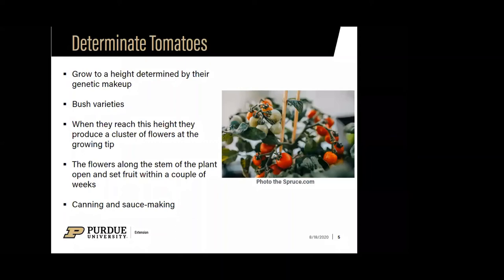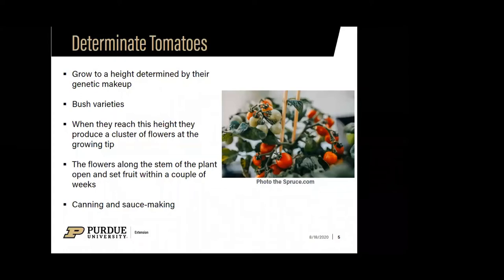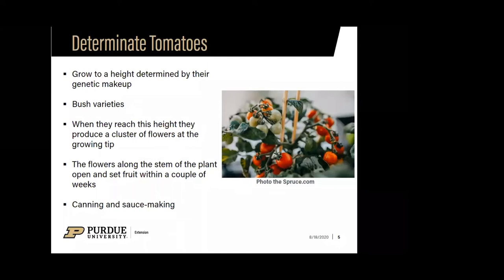Tomatoes are classified according to their growth habit: determinate and indeterminate. Determinate tomatoes reach a specific height determined by their genetic makeup — you may have heard of these as bush varieties. When they reach that height, they produce a cluster of flowers at the growing tip, and fruit sets within a couple of weeks. These are really good for canning and sauce making — think roma and paste tomatoes.